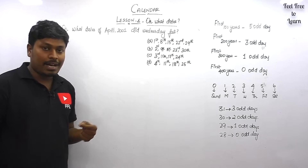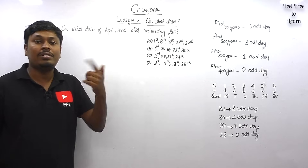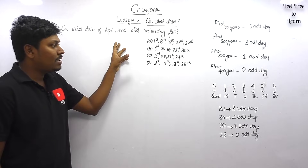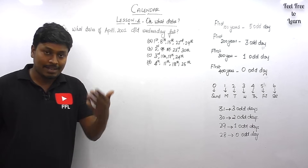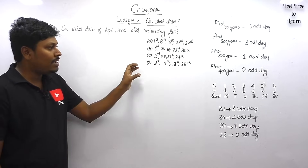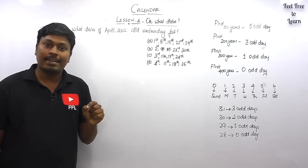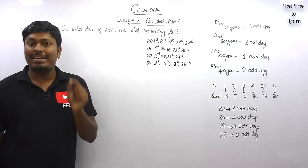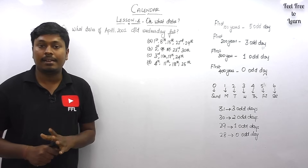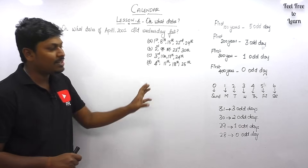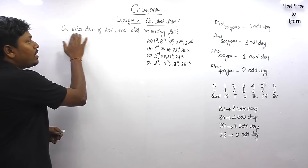The question type is: they usually give a month and year, and our target is to find on what dates Wednesday, Thursday, or Sunday falls. It's interesting, and for this you don't need to study any new concept. The concepts we already studied in lessons one, two, and three can be applied here. Basics are important — you have to know them 100%, not 99%, to crack all the toughest questions in this topic.